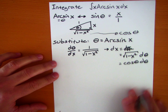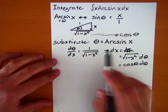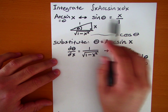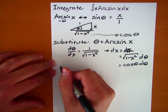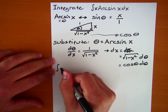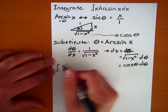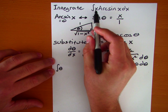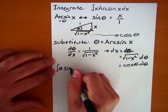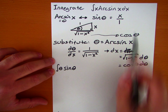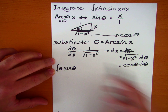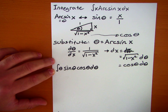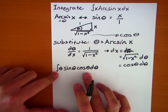We still need to finish the substitution. Since theta equals arcsine of x, then x equals sine of theta. So the full substitution for our integral is: arcsine of x becomes theta, x becomes sin(θ), and dx becomes cos(θ) dθ. That is our integral after the first substitution: ∫ θ · sin(θ) · cos(θ) dθ.